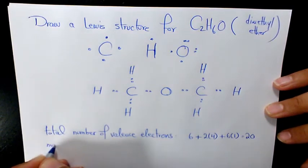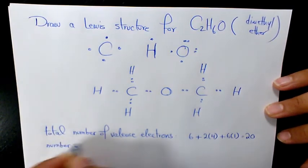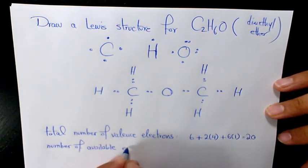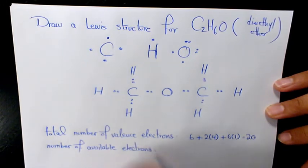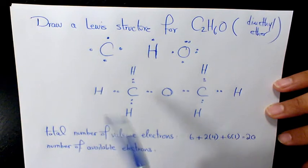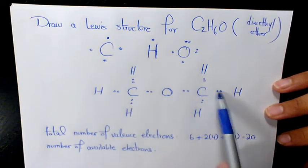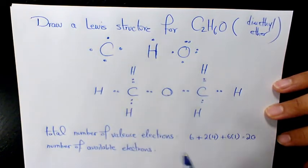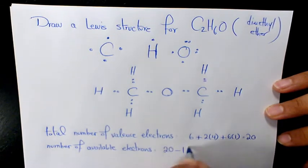Now we need to find out the number of available electrons. The number of available electrons — let's count how many we used: one two three four five six seven eight, eight times two is sixteen. So we have 20 minus 16, we have four available electrons.